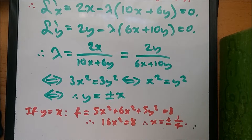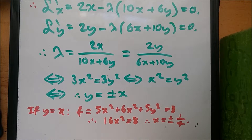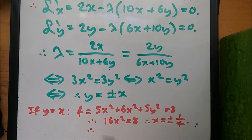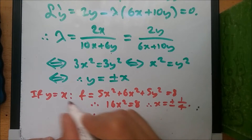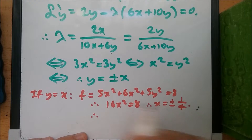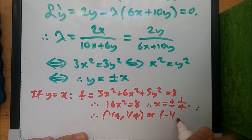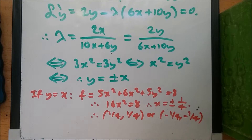Since x equals y in this case, the first set of coordinates is (1/√2, 1/√2) and (-1/√2, -1/√2).